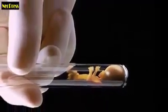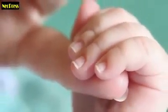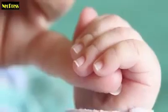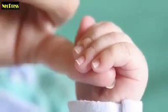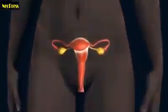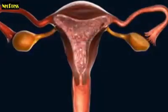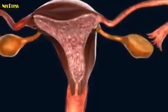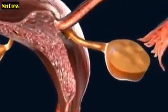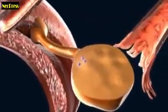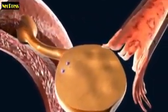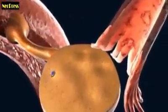In vitro fertilization is a form of assisted pregnancy for those who may not be able to conceive naturally. In the monthly ovulation cycle, one of the ovaries releases an egg. After ovulation, the egg enters the fallopian tube.